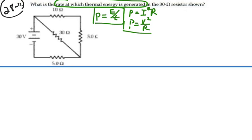So we need to find either the current or the voltage in that 30 ohm resistor. That's what we need to do.